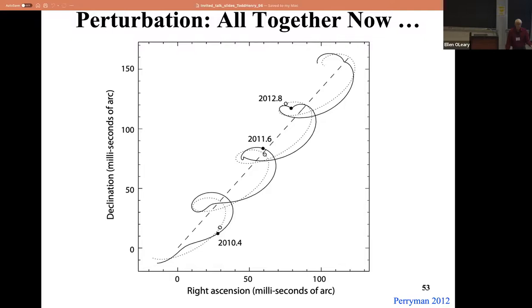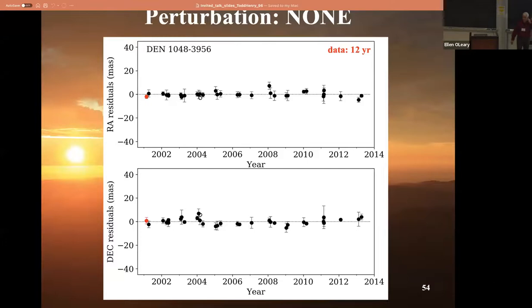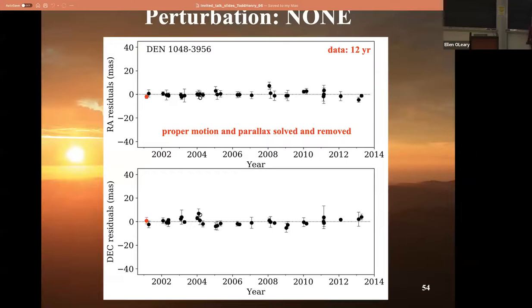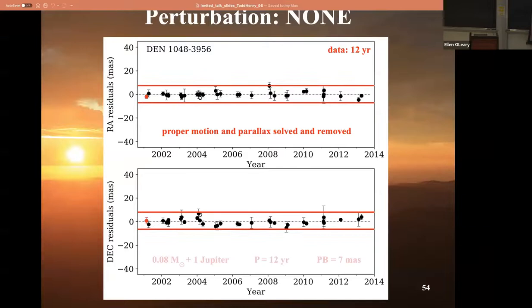We've tried it. These are data from the 0.9 meter telescope - we've already removed the parallax and proper motion, so what's left is a flat line if there's no companion. On the top you see a flat line in right ascension, on the bottom a flat line in declination. There's no planet pulling on it down to a level that a Jupiter in a 12-year orbit would cause - a perturbation on each axis of roughly 7 milli-arc seconds. We don't see that.